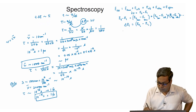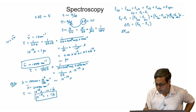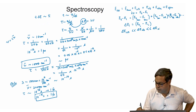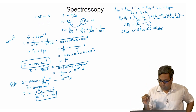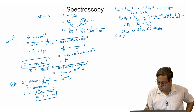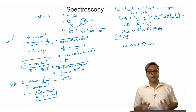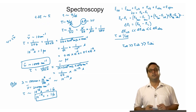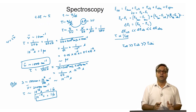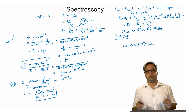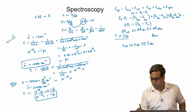In general, delta E rotational is much less than delta E vibrational, which is much less than delta E electronic. Since the time scale is inversely proportional to delta E, this means tau rotational is greater than tau vibrational, which is much larger than tau electronic. Thus, when the time scales of spectroscopic processes differ appreciably, one can separately treat different modes of motion. This approximation is known as the Born-Oppenheimer approximation.